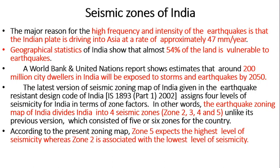The latest earthquake zonation map of the Indian subcontinent is published in IS 1893 Part 1 (2002), which assigns four levels based on the Mercalli magnitude scale. India is classified into zones 2, 3, 4, and 5. Zone 5 is where very high damage is expected, and zone 2 is expected to have very low damage during an earthquake.